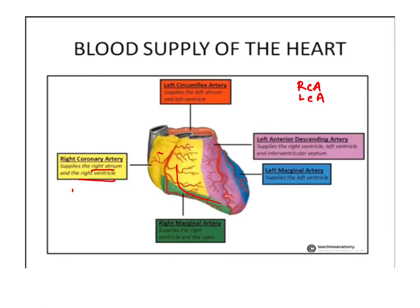The left coronary artery supplies the left atrium and the left ventricle through its branches — the left circumflex artery and the left anterior descending artery. The left circumflex artery supplies the left atrium and left ventricle. The left anterior descending artery supplies the right ventricle, left ventricle, and the interventricular septum. There is also a left marginal artery supplying the left ventricle, and the right marginal artery. The descending branch of the right coronary artery supplies the right ventricle and the apex.